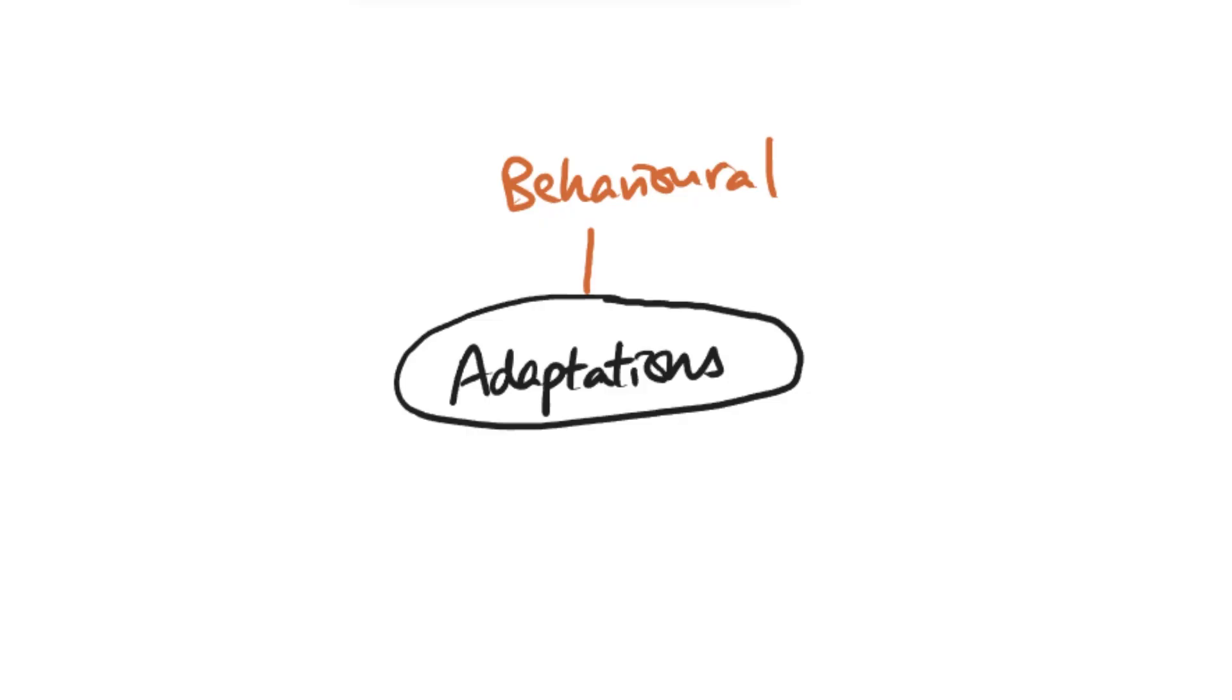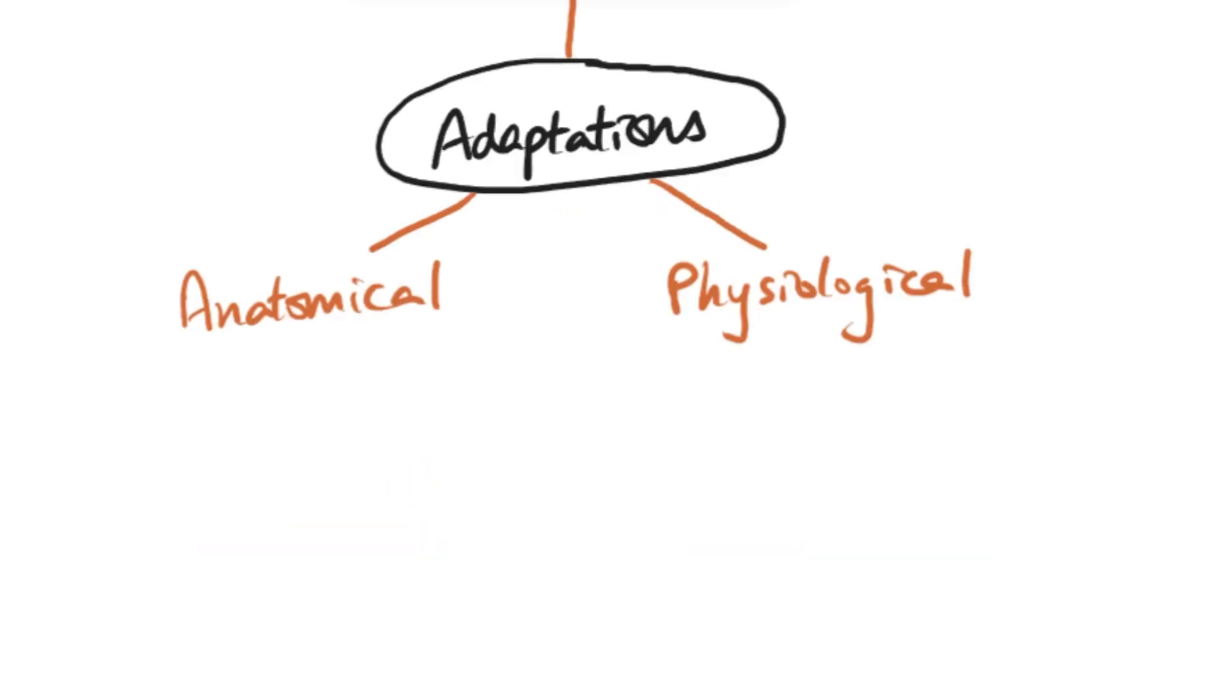Or perhaps hide in the shade. Those are adaptations, same as how you put on a coat or jacket when you're feeling cold - that is a behavioral adaptation. As for the other two, it's quite easy to mix them up, so it's really important you understand the difference. One of them is anatomical which refers to the physical features of the organism.